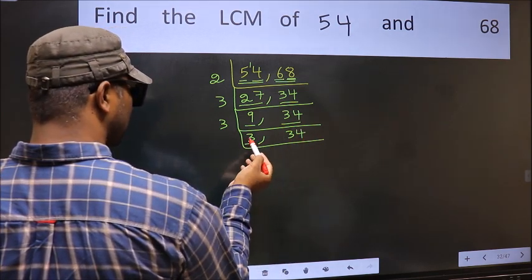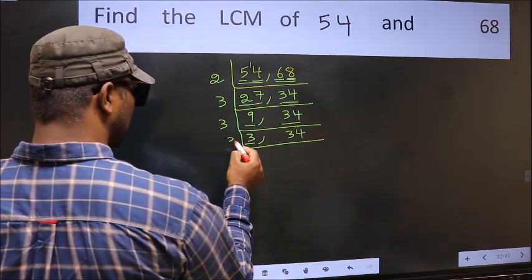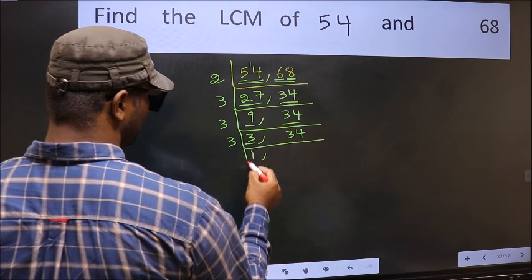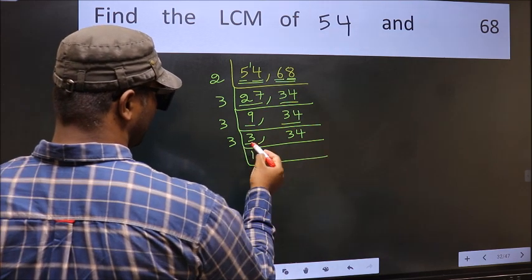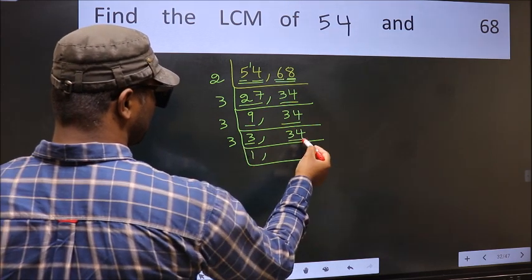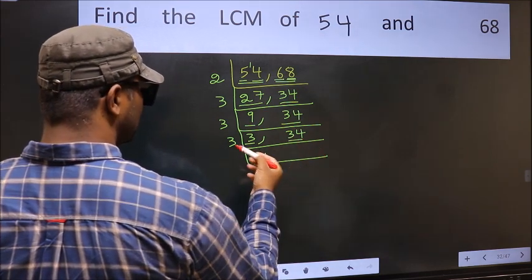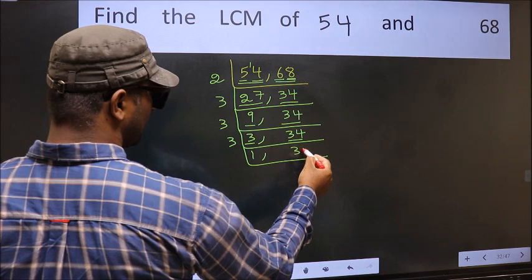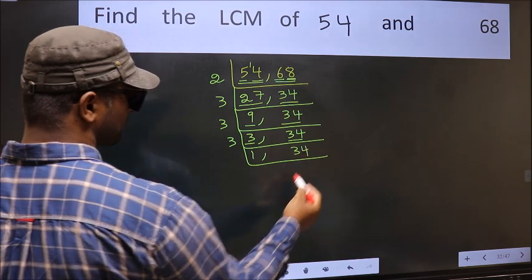Now here we have 3. 3 is a prime number, so 3×1 is 3. The other number is 34, which is not divisible by 3, so we write it down as it is.